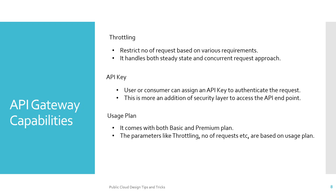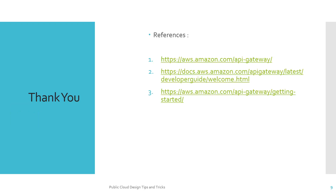Other capabilities include throttling, which restricts the number of requests based on consumer requirements, working on a steady-state count or concurrent request count approach. API keys provide a security-driven approach where a specific consumer is identified by assigning a specific API key, which acts as an authentication parameter when talking to the API endpoint, adding an extra layer of security. Usage plans come in two types — basic and premium — and allow you to configure parameters like throttling and number of requests.